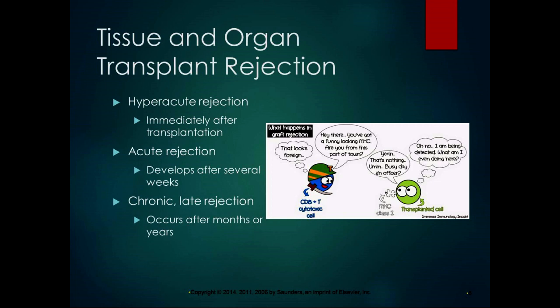Rejection involves a type 4 cell-mediated hypersensitivity reaction, and we're going to talk about the four types of hypersensitivity reaction. It also involves a humoral response, and both of those responses cause inflammation and tissue necrosis.